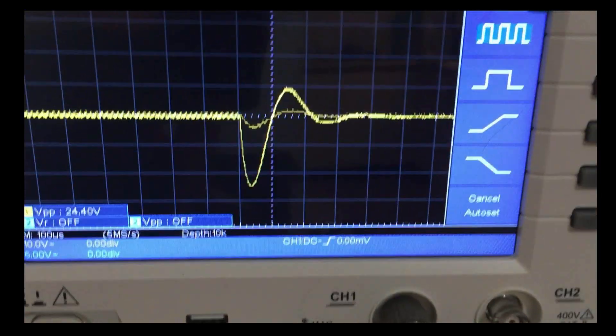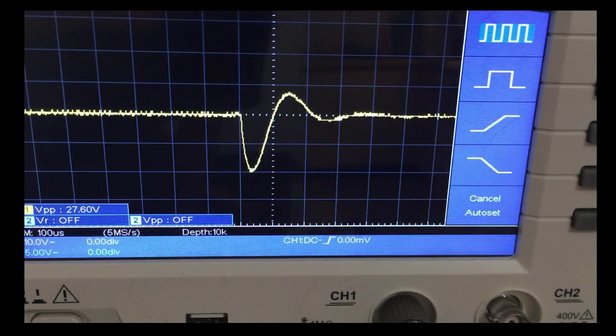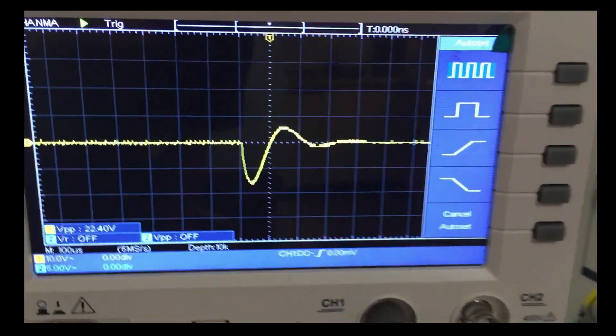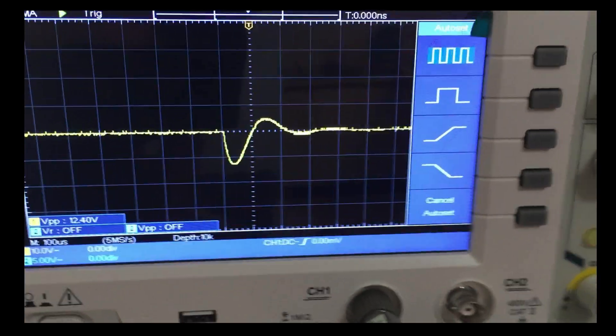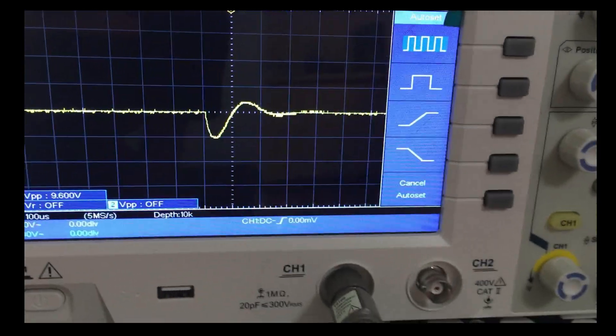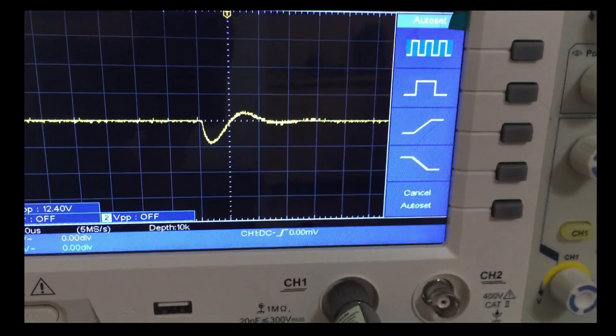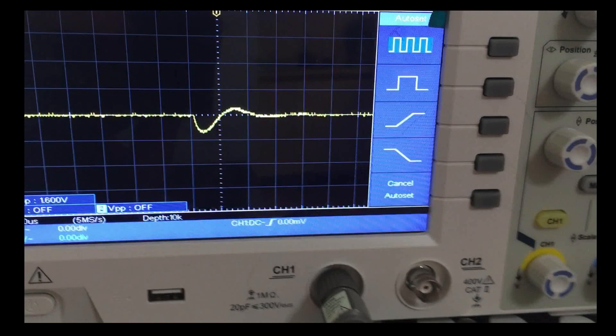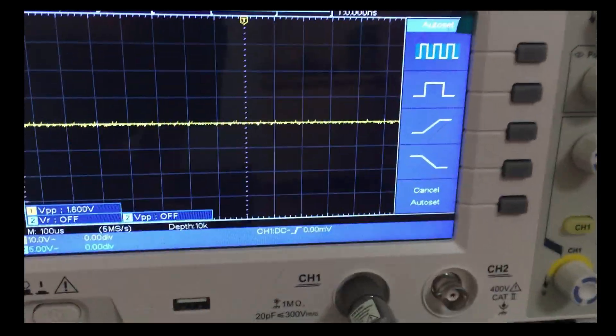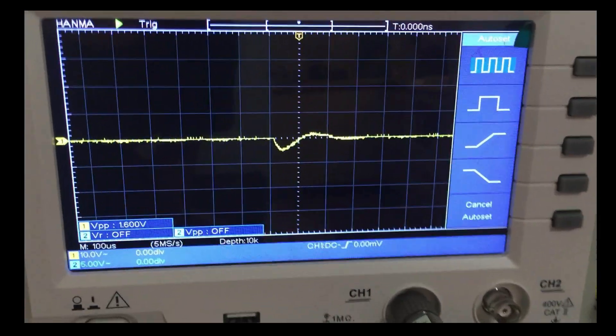When it blinks, I got the output here of the secondary, and look what you see here. You get the positive spike and then it spikes back at much higher amplitudes. So there's your simple over-unity right there.